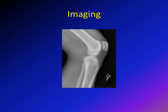For imaging in Osgood-Schlatter disease, you order a lateral x-ray of the knee. What you will see is enlargement of the tibial tubercle, fragmentation of the tibial tubercle, or ossification within the patellar tendon. All these are x-ray findings of Osgood-Schlatter disease.